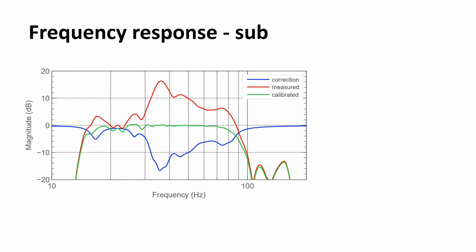We also show the frequency response of the subwoofer. In this example, I would be really happy because it's a linear response after calibration. If you see notches, please always try a different positioning of the subwoofer. It should always be close to the wall because of cancellations, but you can move it left or right since sidewalls can also interact. If you're not sure, just make one group with the subwoofer only, move it, measure the frequency response, move it again, and it's easy to find the best spot.